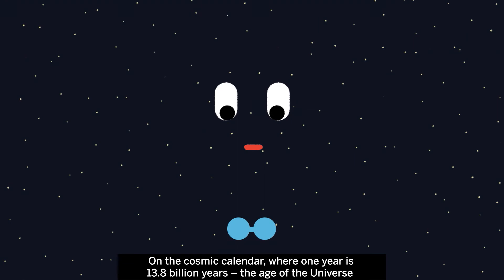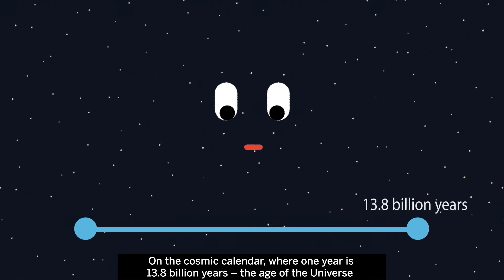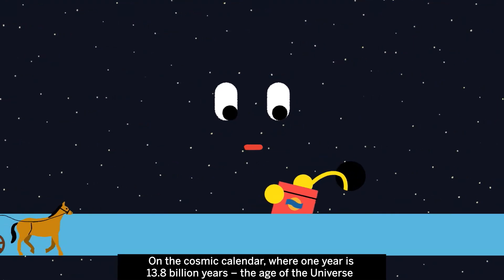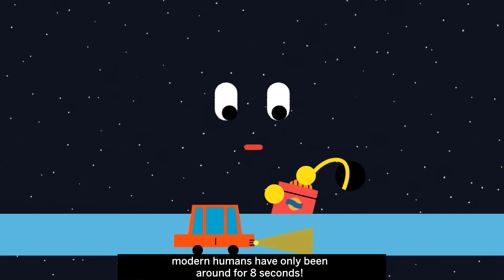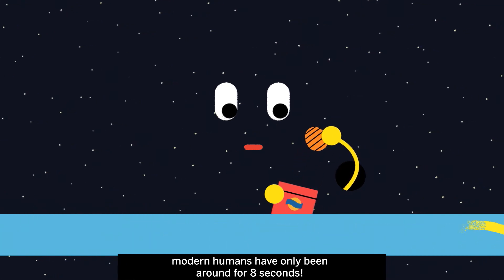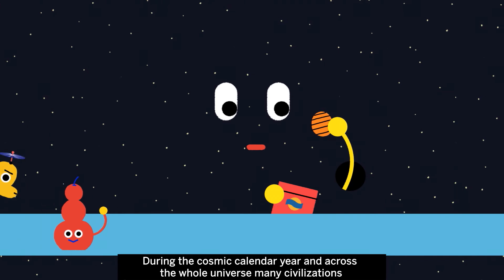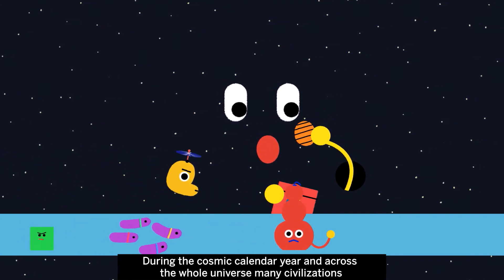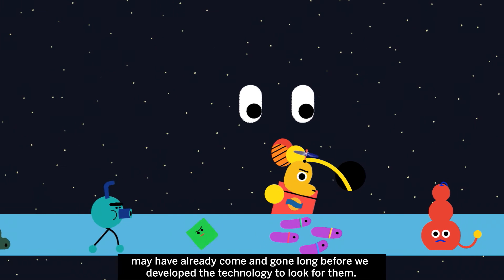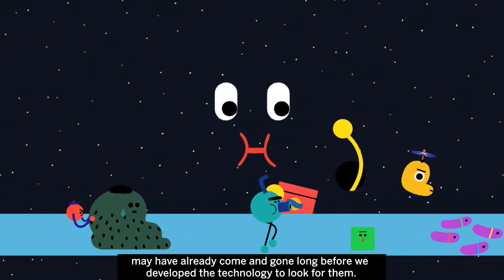On the Cosmic Calendar, where one year is 13.8 billion years, the age of the Universe, modern humans have only been around for 8 seconds. During the Cosmic Calendar year and across the whole Universe, many civilizations may already have come and gone, long before we developed the technology to look for them.